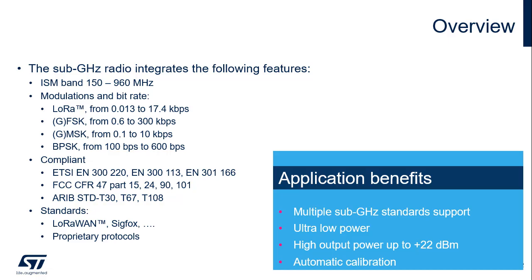The sub-Gigahertz radio operates in the ISM 150–960 MHz band, providing LoRa, Frequency Shift Keying, Minimum Shift Keying, Gaussian Frequency Shift Keying, Gaussian Minimum Shift Keying, and Binary Phase Shift Keying modulations.